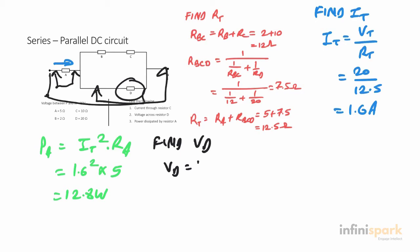VA equals IT times RA, which is 1.6 times 5, giving us 8 volts. Putting that in: 20 minus 8 equals 12 volts. That's our VD.